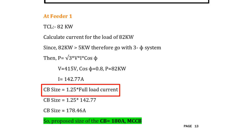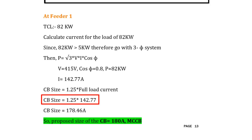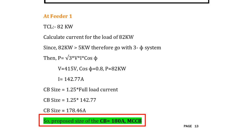Then for the circuit breaker size formula: 1.25 × full load current = 1.25 × 142.77 = 178.46 amperes. The available standard size for 178.46 amperes is 180 amperes. Since the current value is greater than 63 amperes, we go with MCCB. The proposed size of the circuit breaker for Feeder 1 is a 180-ampere MCCB.